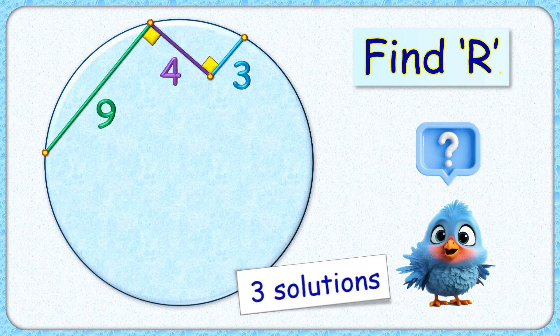Welcome everyone. This interesting question gives us a circle with 3 line segments which are perpendicular to each other and having lengths 9, 4, and 3 cm. The exciting part is that with this limited information we have to find the radius of the circle. For this we will discuss 3 different solutions.